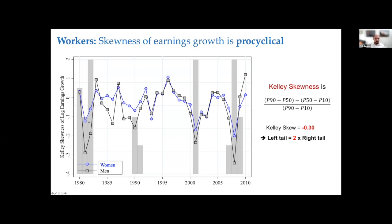The pattern is clear — it's like clockwork. If you look at this skewness measure, in every recession it dips, and after the recession it comes back up again. In terms of magnitudes, the Kelly skewness is around 0.25 in the early 2000s recession and minus 0.35 in the Great Recession. A Kelly skewness of minus 0.3 means the left tail of the income-change distribution is twice as long as the right tail. And look how quickly this happens — right before the Great Recession skewness was positive, and in two years there was this big change in the shock distribution that households face.